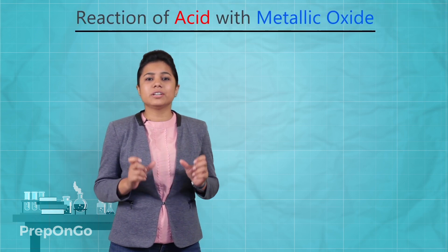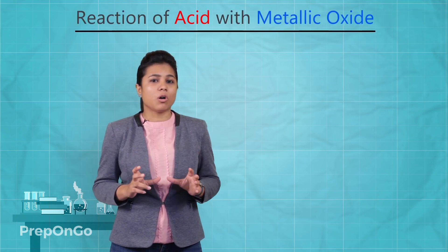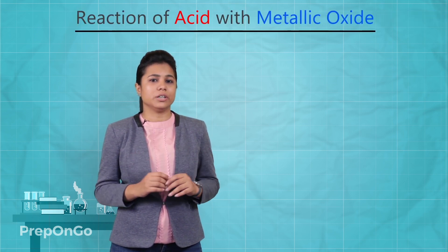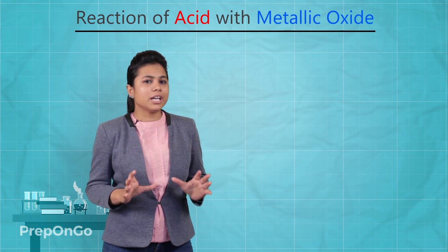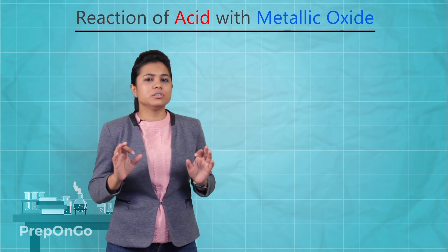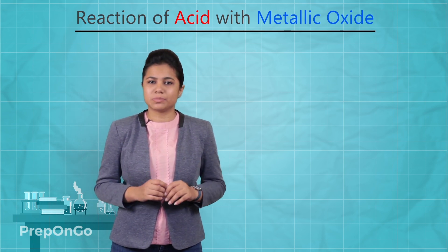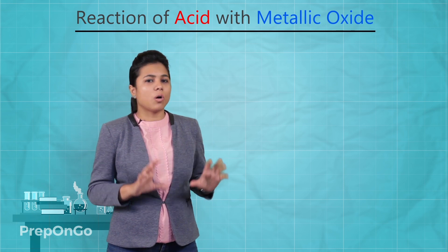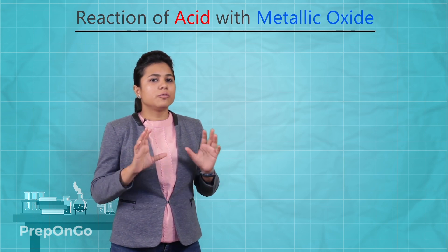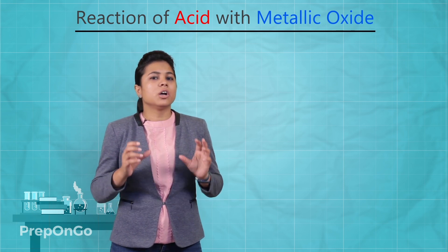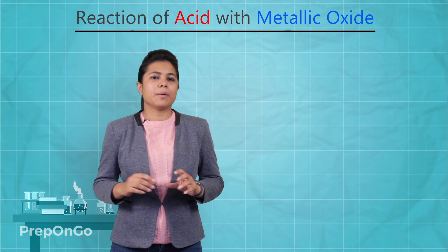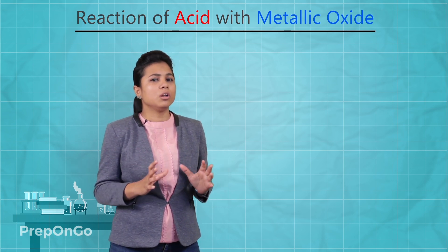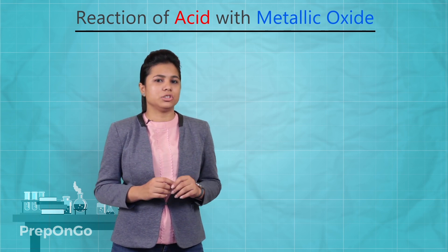Now, how acids react with metallic oxides — we are going to see this here. This type of reaction is a double displacement reaction. In this case, the oxygen from the metallic oxides will go and combine with the hydrogen, and the remaining elements will combine with each other.